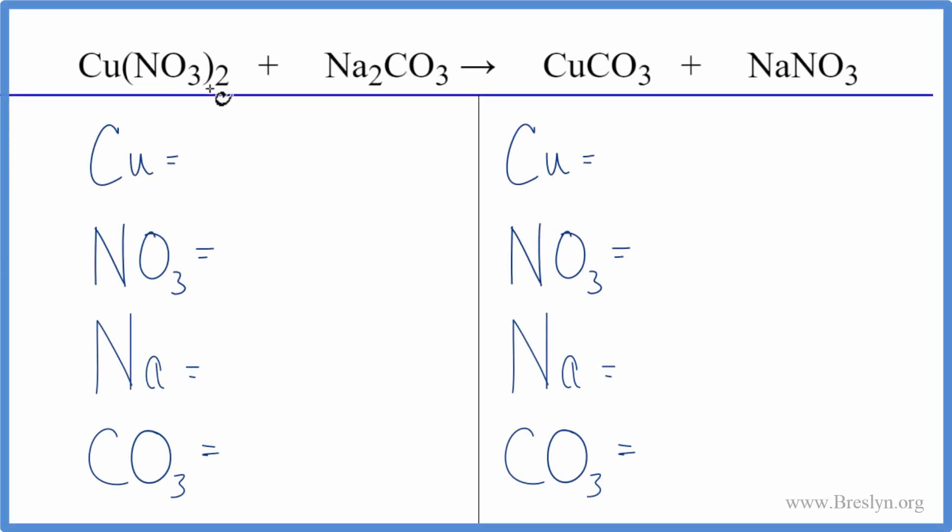In this equation, we have copper 2 nitrate plus sodium carbonate, and this is a double displacement reaction. The copper and the sodium are going to switch places.